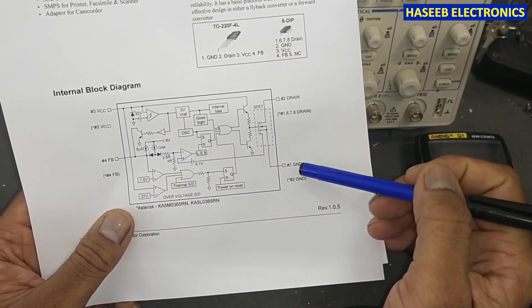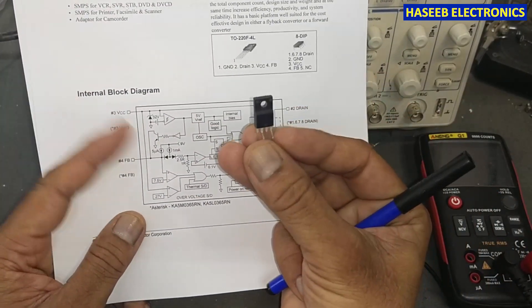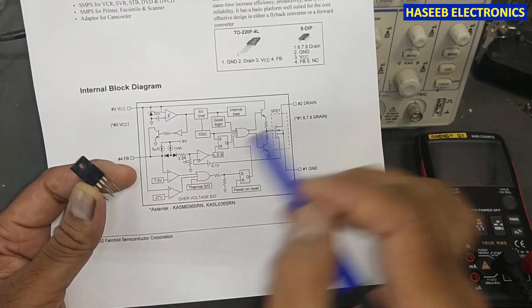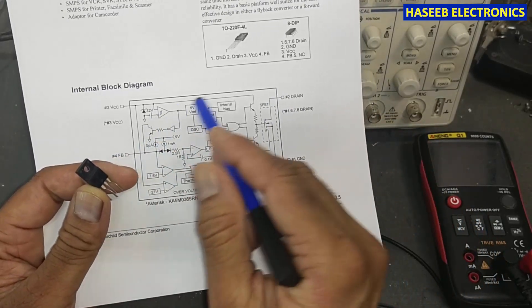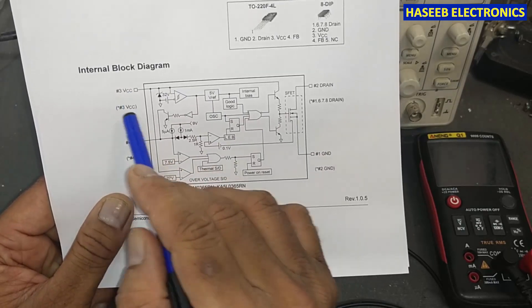Either it is in DIP package 8-pin or 4-pin package, it has 4 terminals. Pin number 1 is ground, pin 2 is drain - so it has built-in MOSFET inside and the MOSFET control circuit. Pin number 4 is feedback, pin number 3 is VCC.